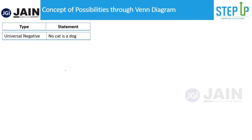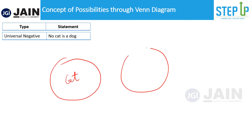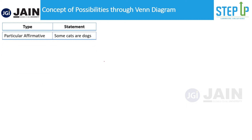The second type of statement is universal negative: 'no cat is a dog.' Here, the diagram for cats and the diagram for dogs are completely disjoint circles — there is no intersection, no element of cat which is also a dog. This is the only possible representation, so there is only one possibility for universal negative.